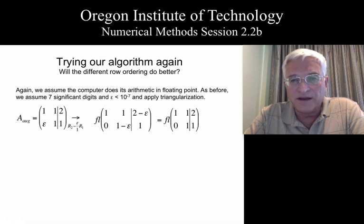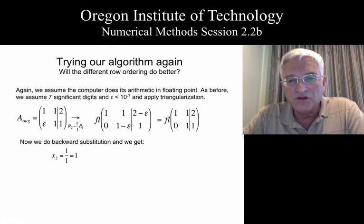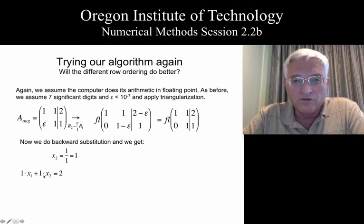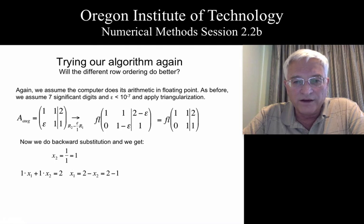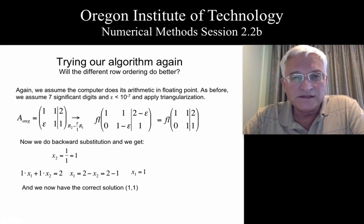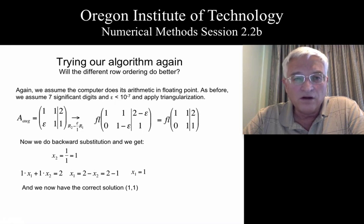We have one more step: backward substitution. We know immediately that x2 is equal to 1, and we can use the first row to form a linear combination using that known value of x2. Doing so, we get x1 equals 2 minus 1, so x1 equals 1. That is the correct solution — the solution we got by hand — and it is not the solution we got before when we had not rearranged the rows of A and the entries of B.